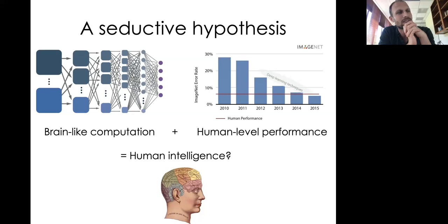Let me start with a seductive hypothesis, which I'm sure all of you have heard before. On the one hand, we have deep learning systems that are vaguely brain-like, and those same systems can achieve human-level performance on various tasks like image recognition. So if we put these two things together, it's seductive to think that we might have a recipe for human intelligence. And of course, that idea has not been lost on a number of people and corporations.